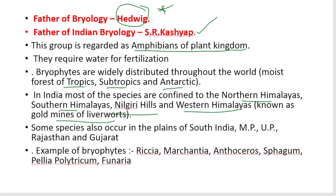Many species are also found in the plains of South India, Madhya Pradesh, Uttar Pradesh, Rajasthan, and Gujarat. Examples include Riccia, Marchantia, Anthoceros, Sphagnum, Pellia, Polytrichum, and Funaria.